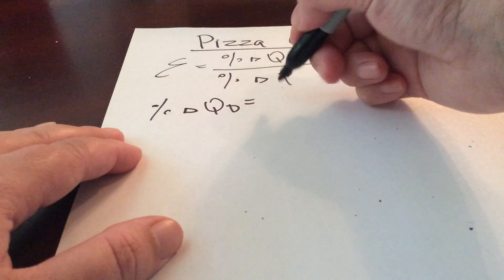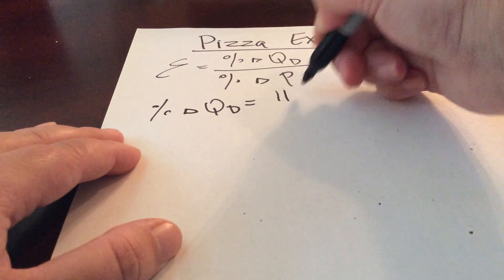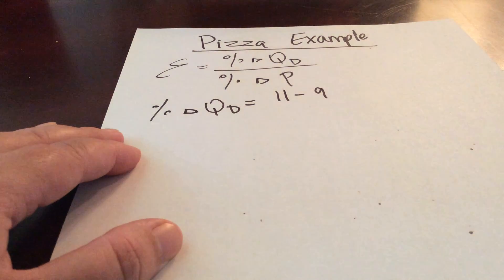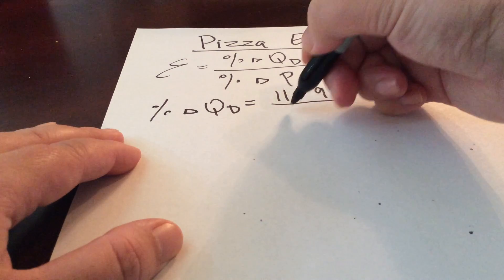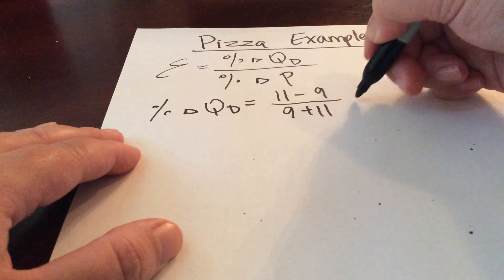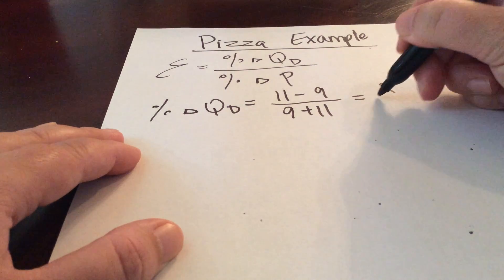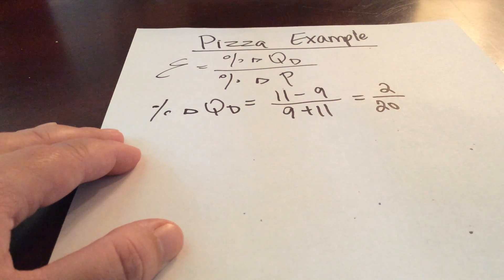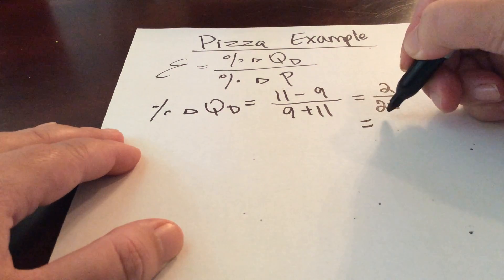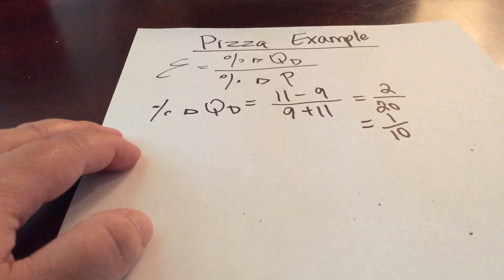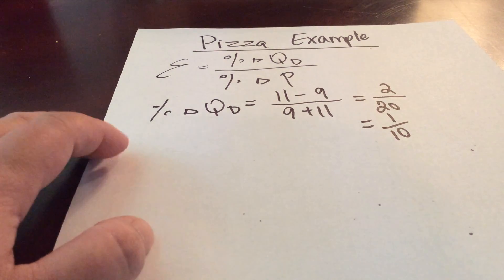And our new quantity demanded was 11. It originally was 9, so we have 11 minus 9 over 9 plus 11. 11 minus 9 would give us 2. 9 plus 11 is 20. And so we would get an answer of 1 over 10 for the percentage change in quantity demanded.